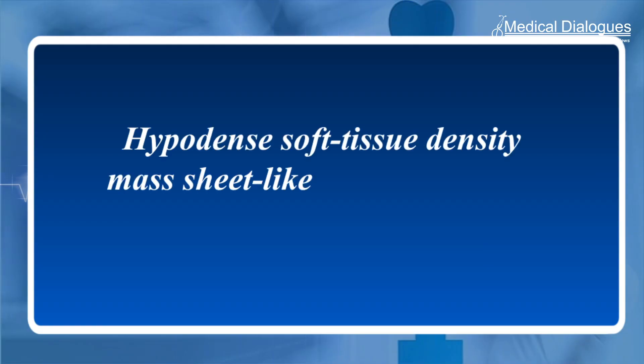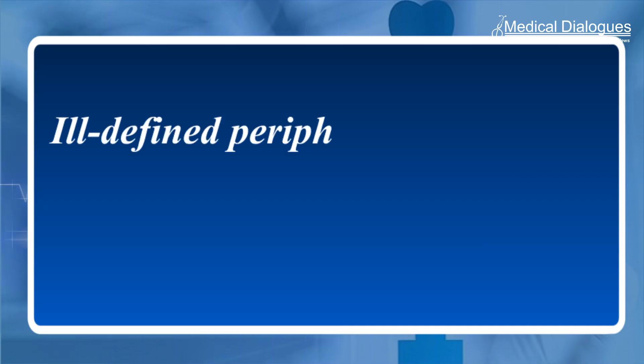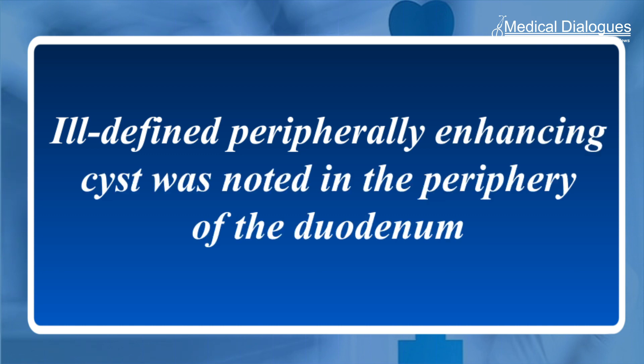On preliminary plain CT, a hyperdense soft tissue density mass with a sheet-like appearance was noted in the pancreaticoduodenal groove, associated with minimal surrounding inflammatory stranding of fat and thickening of the duodenal wall. An ill-defined peripherally enhancing cyst was noted in the periphery of the duodenum, which appeared to be compressing the lumen of the duodenum, causing focal stenosis.